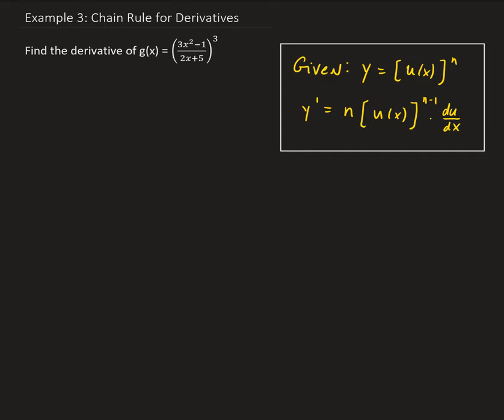So in order to do this, we're going to apply the general power rule, which is what you see in this box here. We're going to bring down the 3. So we have g prime of x equal to 3 times 3x squared minus 1, all divided by 2x plus 5, raised to the second power.